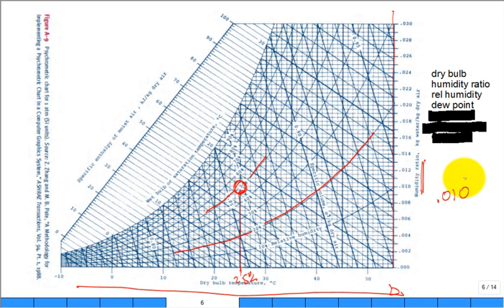Conceptually, to get to the dew point temperature you cool the air so it gets closer to being saturated without changing the amount of moisture in it. So if I drop it to 24, 23, 22, 21, 20 degrees, it marches along a horizontal line. If I cool it from 25 to 20 degrees, did the humidity ratio change? No. Did the relative humidity change? It went up.